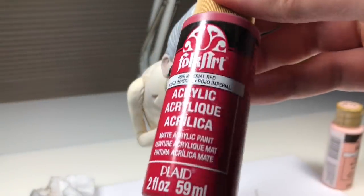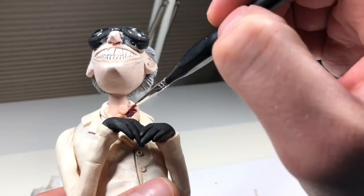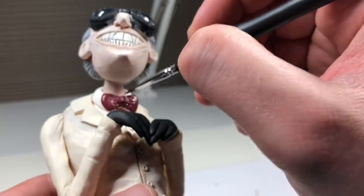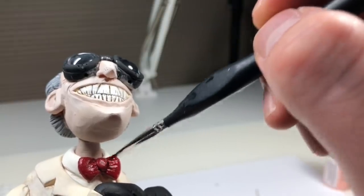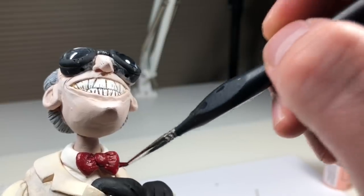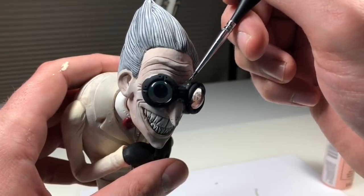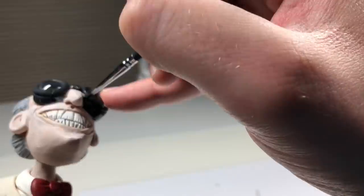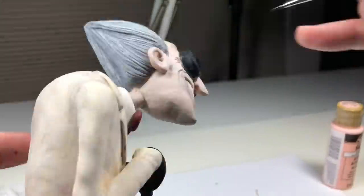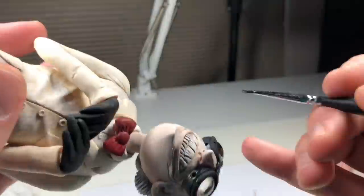Now for his bowtie, I'm using Folk Art Imperial Red tinted with pure black to create this nice color here, and I did lighten it just a little bit, as you can see. Once that's done, it's time to paint the goggles. I'm using dark green to start, and then I lighten that up with a lighter green.